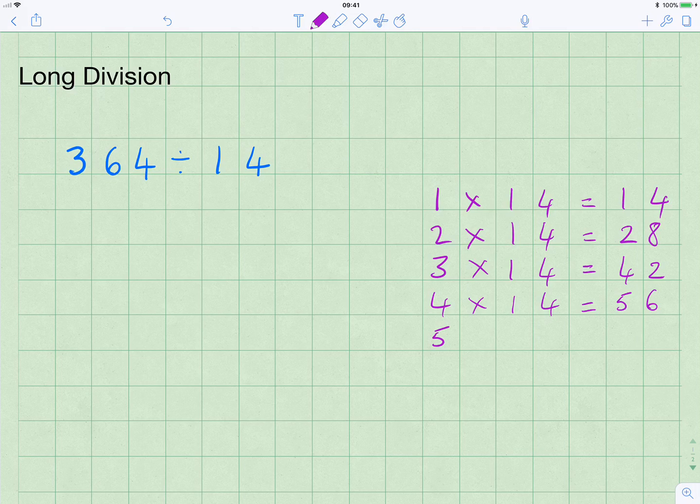Five times 14 equals 70. And six times 14 equals 84. That's probably as far as we will need to go, but obviously you can continue it on if you need to.